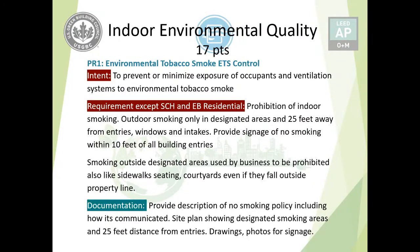For all other adaptations, indoor smoking is completely prohibited and outdoor smoking is only allowed in designated areas. These designated areas should be 25 feet away from all entries, windows, and intakes, serving the purpose of minimizing ETS exposure to building occupants. Signage should be provided for no smoking and installed within 10 feet of all building entries. These requirements apply to areas directly under the control of the building.